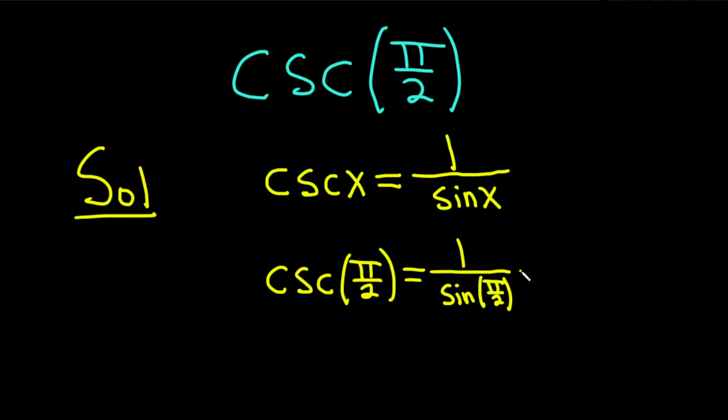The sine of pi over 2 is 1, so this is 1 over 1, and so you just get 1. So the answer to this problem is 1.